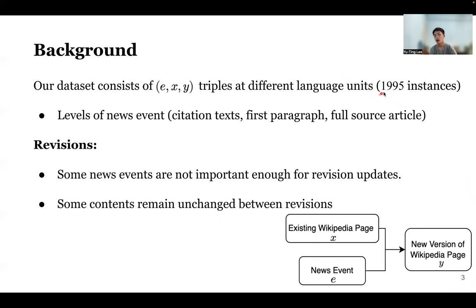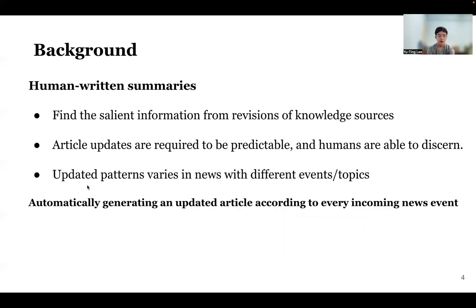In total, we have about 1,995 instances in our data. Some news events are not salient enough for a revision update, so we keep data where the revision might be the same, to help the model learn what might change and what remains unchanged in a later version. In traditional ways, summaries and updating news are mostly written by humans. Articles for different types of events follow specific update patterns. To automatically generate updated content covering the previous version and incoming news events, we provide multiple pairs of knowledge contents to help the model learn at a fine-grade level.